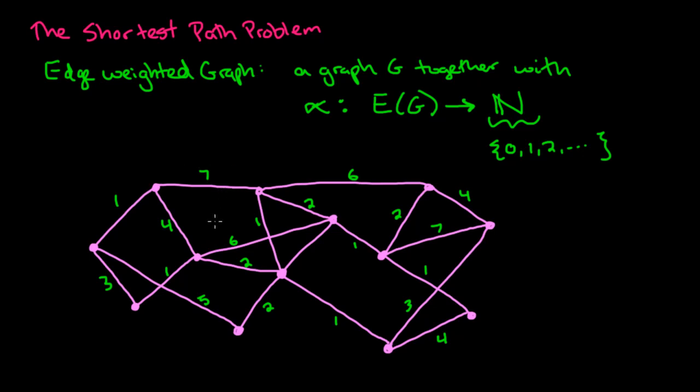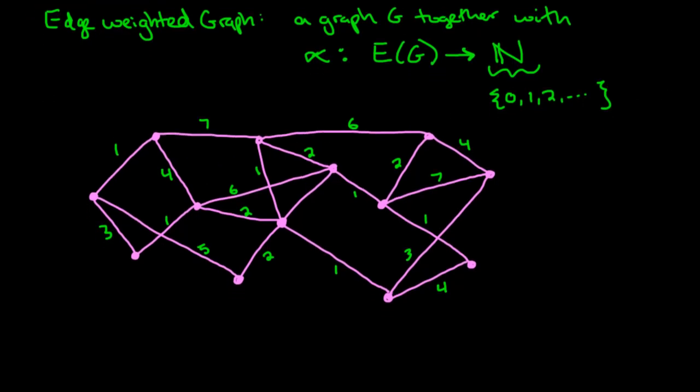Now with the weights on the graph, we should be able to define a couple of things. The first thing is that we want to say that the weight of a particular edge is going to be called the length. So if we have this function, this weight function applied to a particular edge uv, this is called the length of the edge uv.